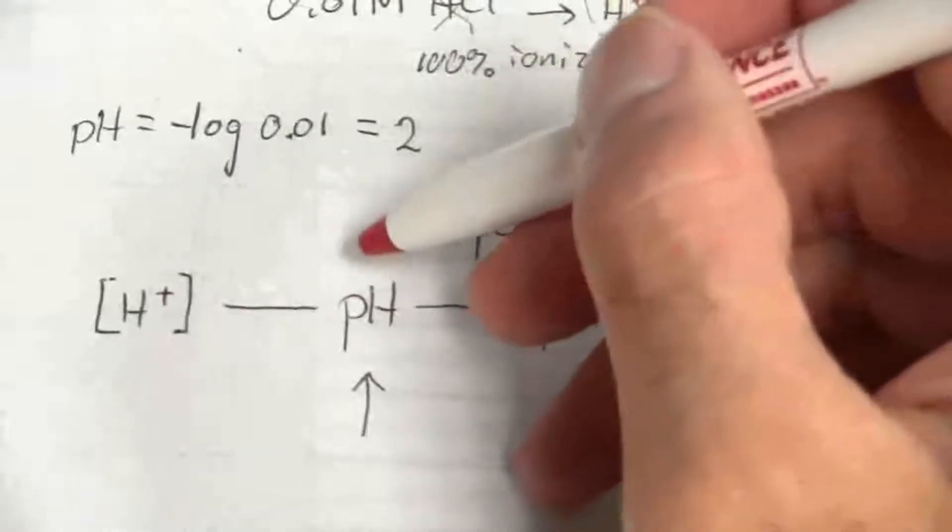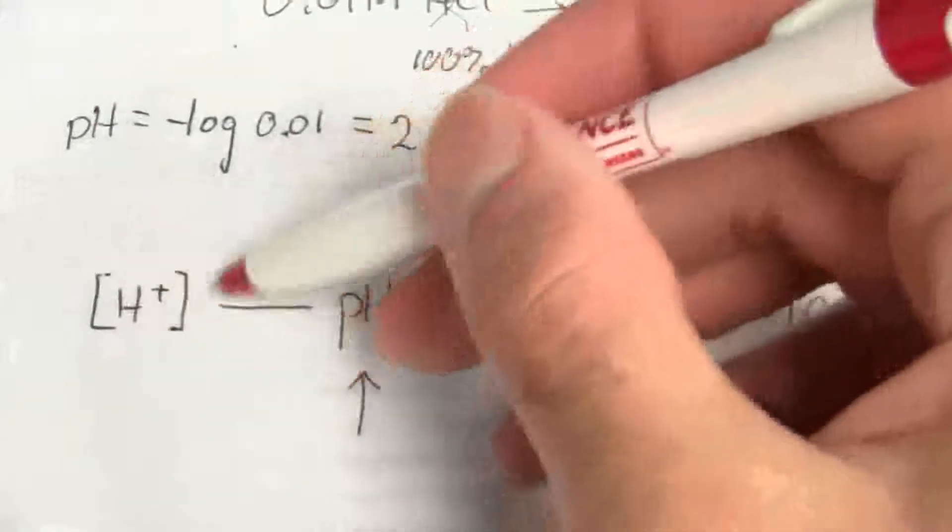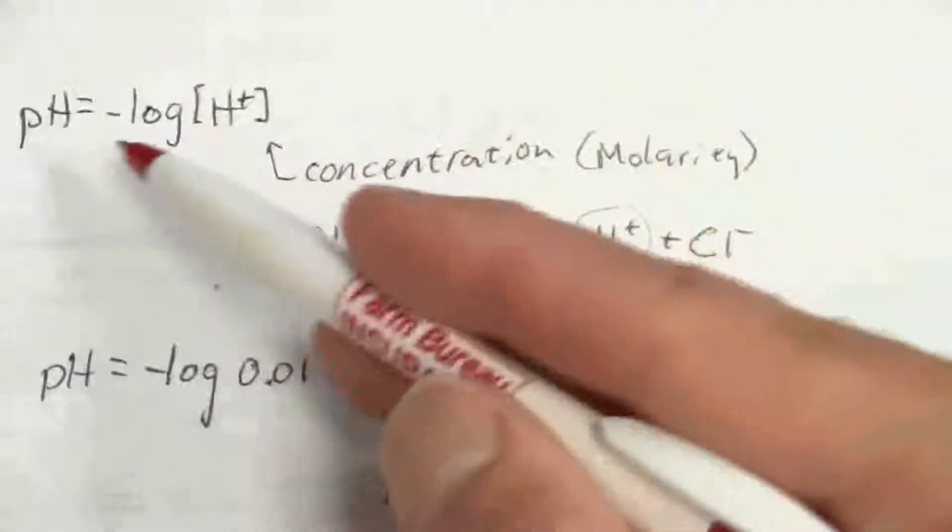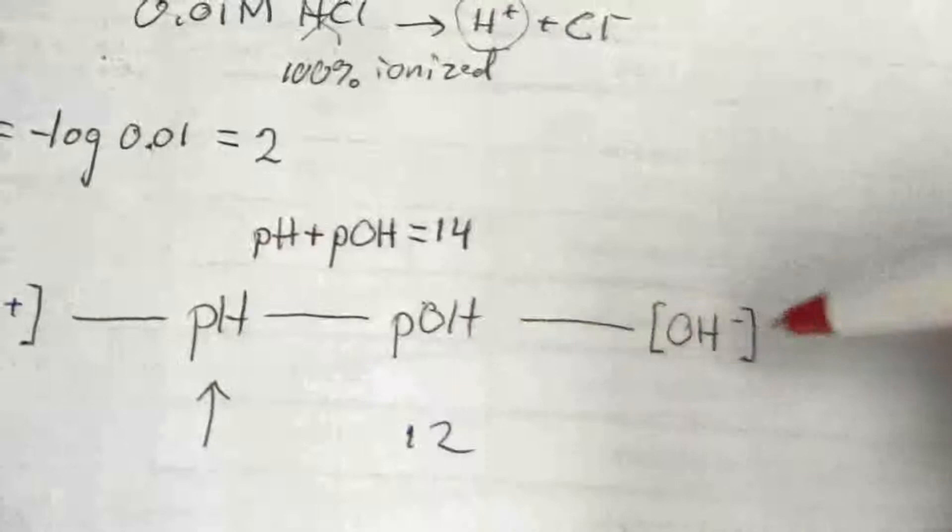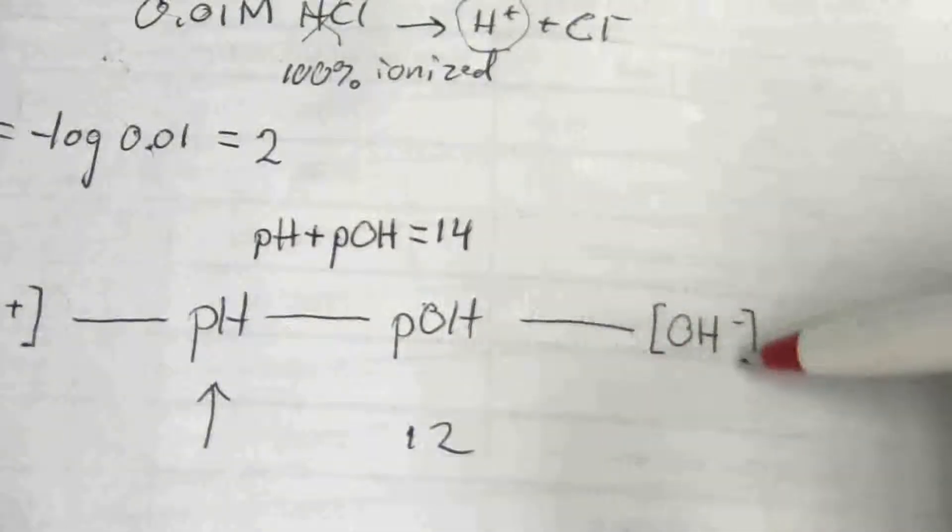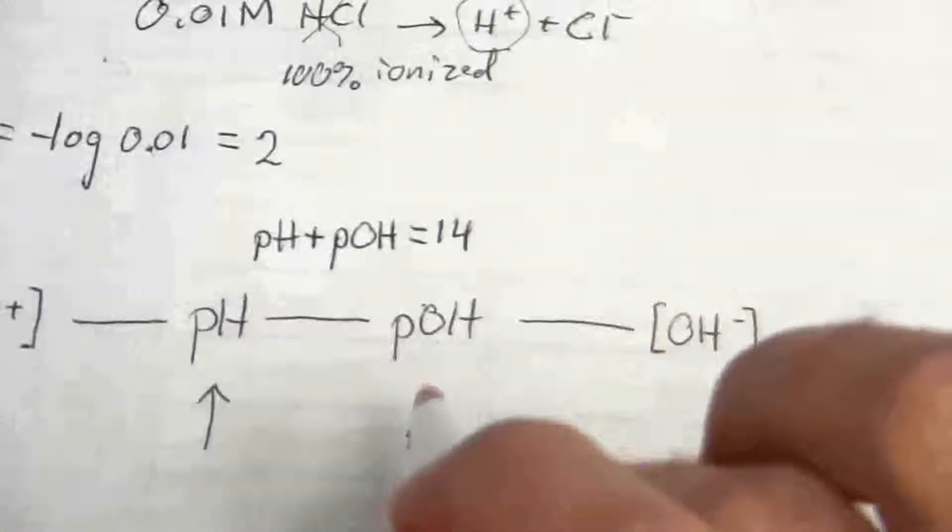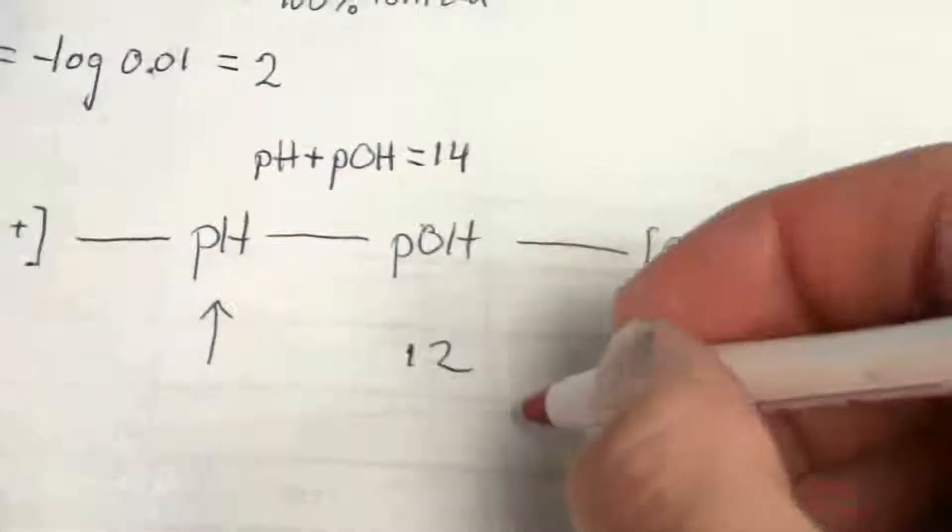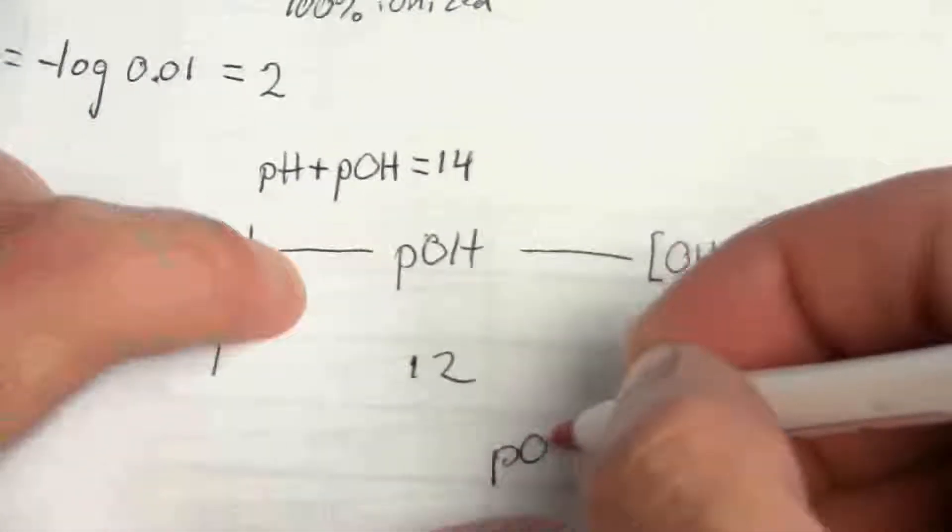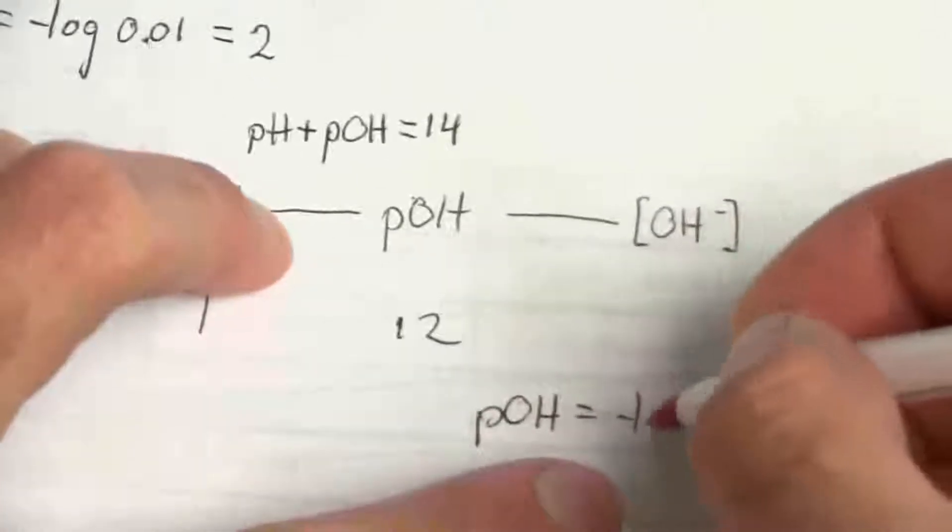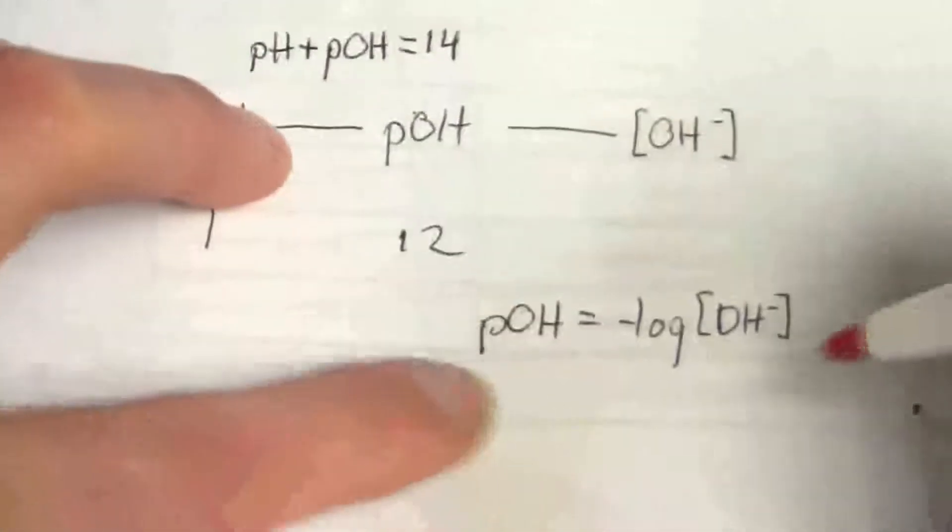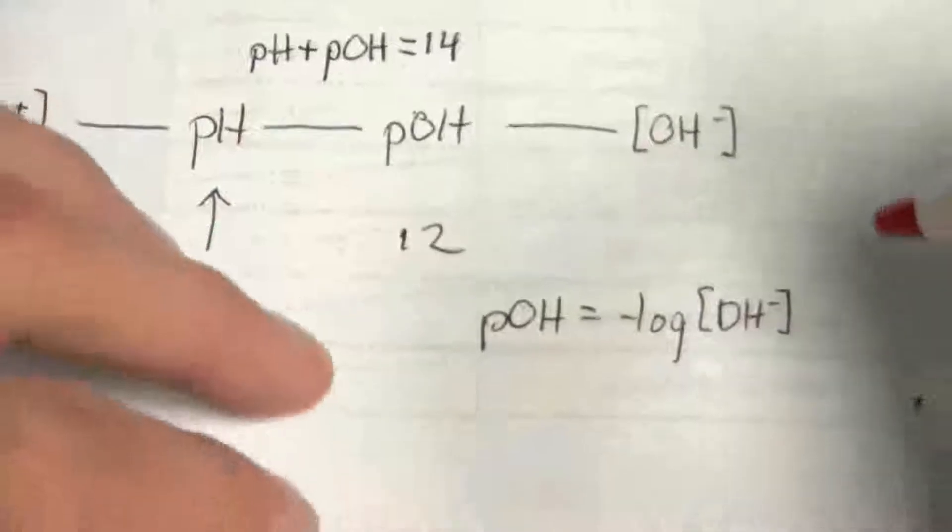We saw how we went this way from hydrogen ion to the pH. That's going like this. Negative log of the hydrogen ion concentration gives you the pH. And likewise, the negative log of the hydroxide ion concentration gives you the pOH. But I have the pOH, and I want the hydroxide ion concentration. So what I need to do is take that same relationship, say that pOH equals negative log of the hydroxide ion concentration, and we're just going to solve this for the hydroxide ion concentration.